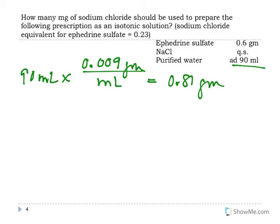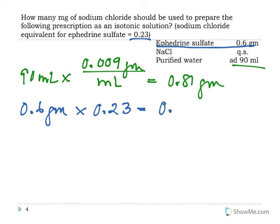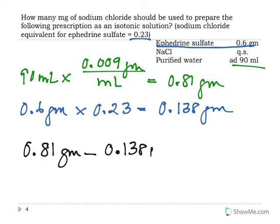But we have ephedrine in the mix, and ephedrine takes away some of those sodium chloride equivalents. For step two, we have 0.6 grams of ephedrine, multiplied by its E-value of 0.23, giving us 0.138 grams — the amount of sodium chloride that the ephedrine replaces. Step three: subtract. The total needed was 0.81 grams, and ephedrine replaces 0.138 grams, so 0.138 grams of sodium chloride still needs to be added to make the solution isotonic.